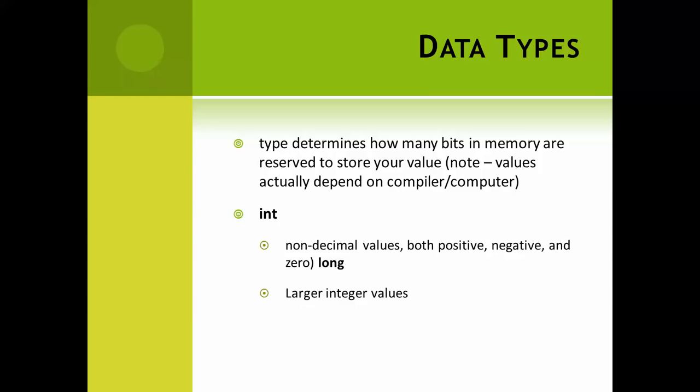We actually have this variation of int called long that saves even more bits. So if we find that int is not able to store a big enough number for us, then we can switch to long and that'll set aside more bits for us. There's also a short incidentally, if you know for sure you're going to have a smaller number and memory is a big deal. For our purposes, int will usually get the job done.